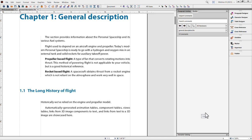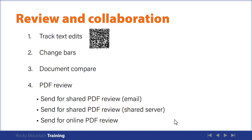That's a look at the three review workflows you can use when your editor doesn't have FrameMaker — an email-based review, a review on a shared server, or the online review. All three are good workflows. I think the online review is going to be the way many of us do this in the future, but we need a few more features to be added. That completes our look at the review and collaboration workflow features within FrameMaker, either handled solely in FrameMaker or along with a PDF.